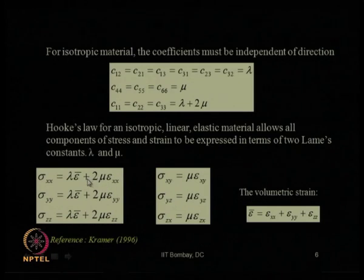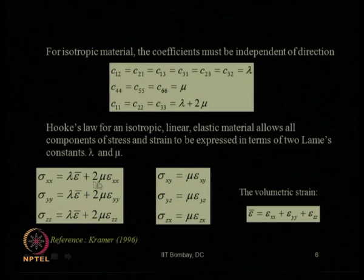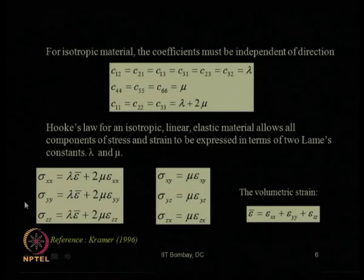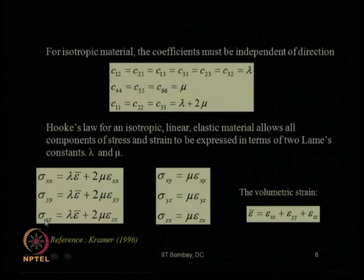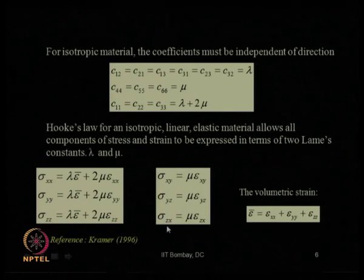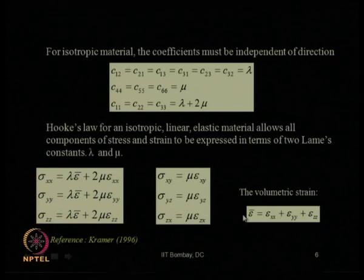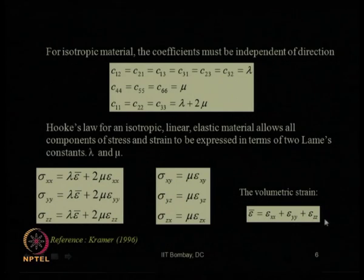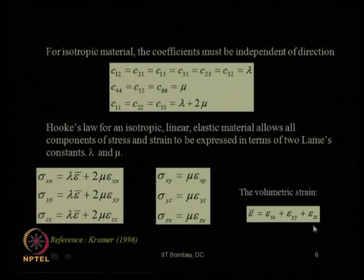On simplification, sigma_xx can be written in terms of epsilon_xx and other strain terms. Sigma_xx = lambda * epsilon_bar + 2*mu*epsilon_xx; sigma_yy and sigma_zz take similar forms. These are the normal stresses. The shear stresses sigma_xy, sigma_yz, and sigma_zx take another form. Here epsilon_bar is the volumetric strain, which is the summation of three normal strains: epsilon_xx + epsilon_yy + epsilon_zz.